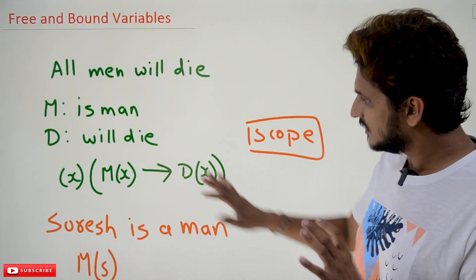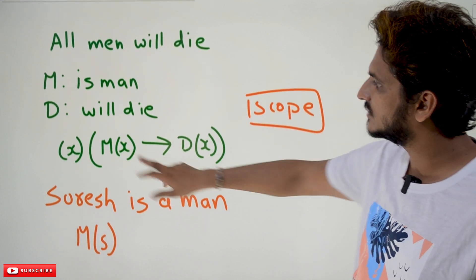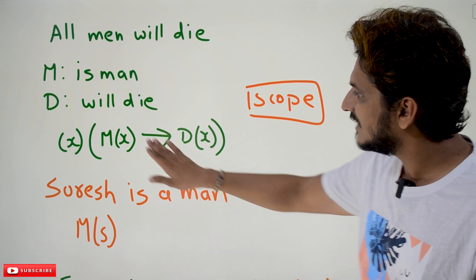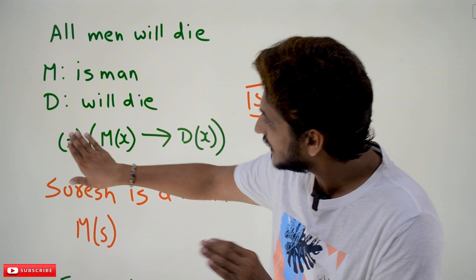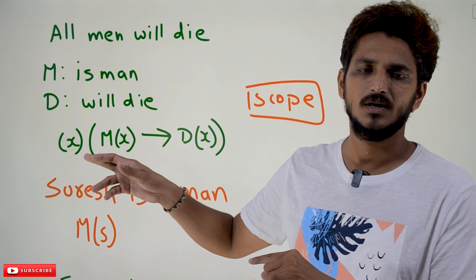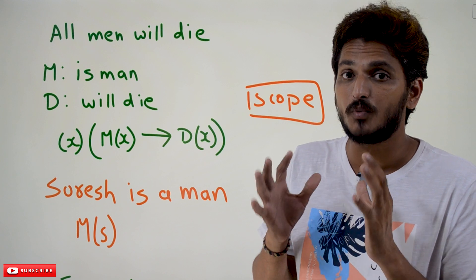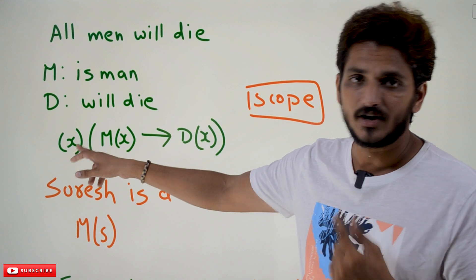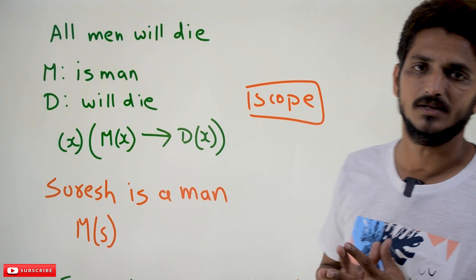In this equation, x is called a bounded variable, because x is a variable that is bounded to the quantifier 'for all.' The key point to understand: variables that are bounded by any quantifier, we call them bounded variables.